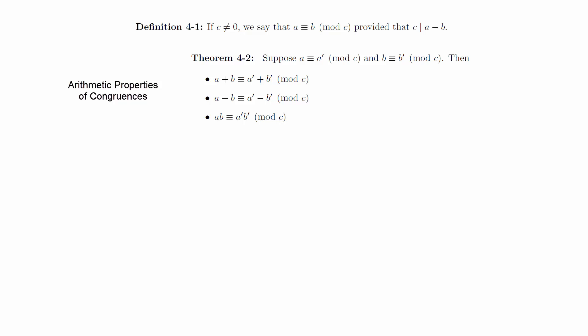Theorem: Suppose a is congruent to a prime mod c, and b is congruent to b prime mod c. Then a plus b is congruent to a prime plus b prime mod c. a minus b is congruent to a prime minus b prime mod c. a times b is congruent to a prime times b prime mod c.